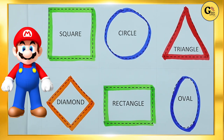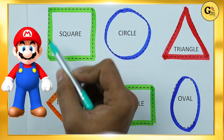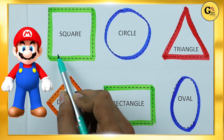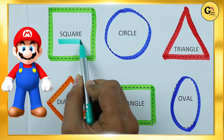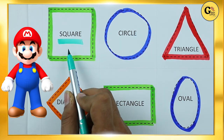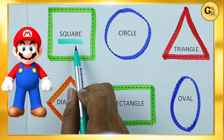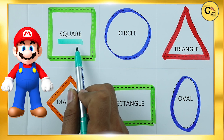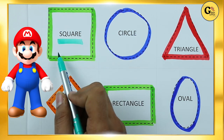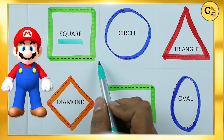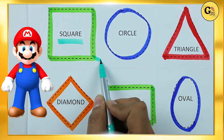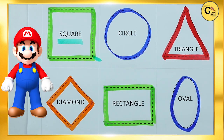Hello friends, today we learn shapes with colors. Which shape is this? Tell me — square. S-Q-U-A-R-E. It's a square with green color.